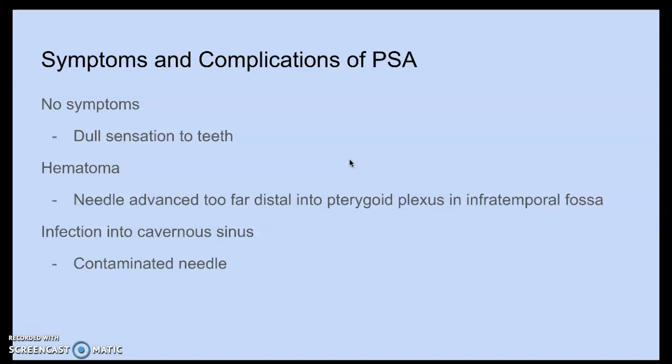Symptoms and complications of PSA: there shouldn't be any significant symptoms. The patient feels a very dull sensation — they can't distinguish what is tapping on their tooth. You can get a hematoma if the needle is advanced too far distal into the pterygoid plexus in the infratemporal fossa. Using a contaminated needle can cause serious complications via the cavernous sinus.